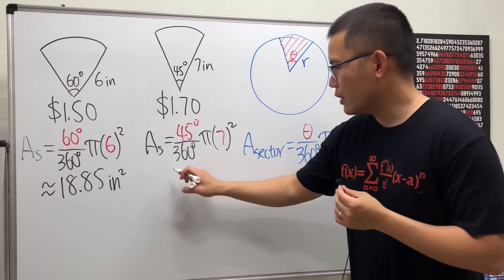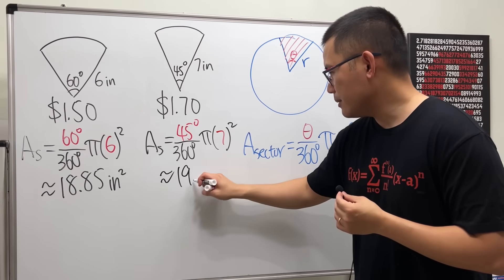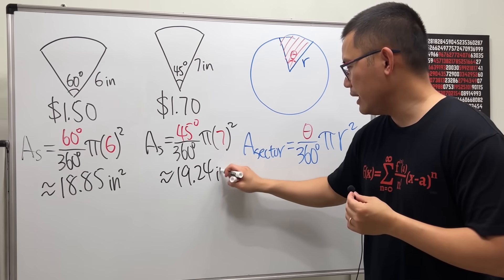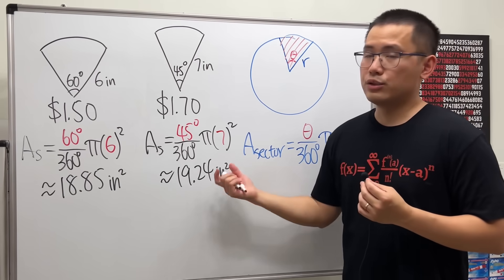Put this on your calculator, we will get approximately 19.24 inches squared. So the second slice is actually bigger, but of course it's also costing more, right?